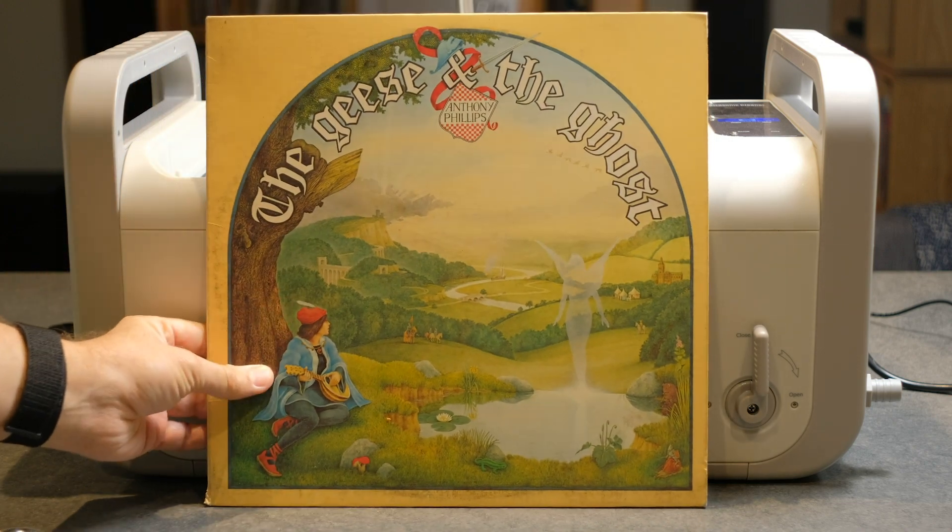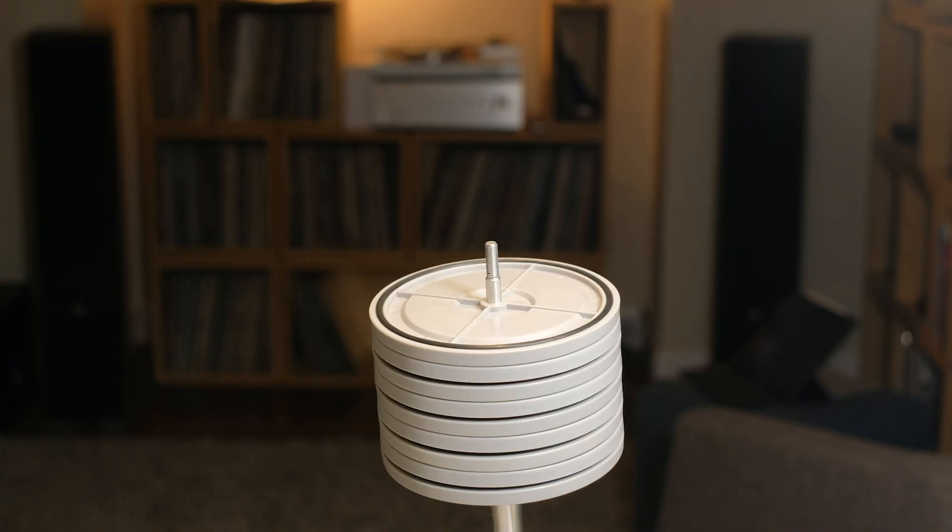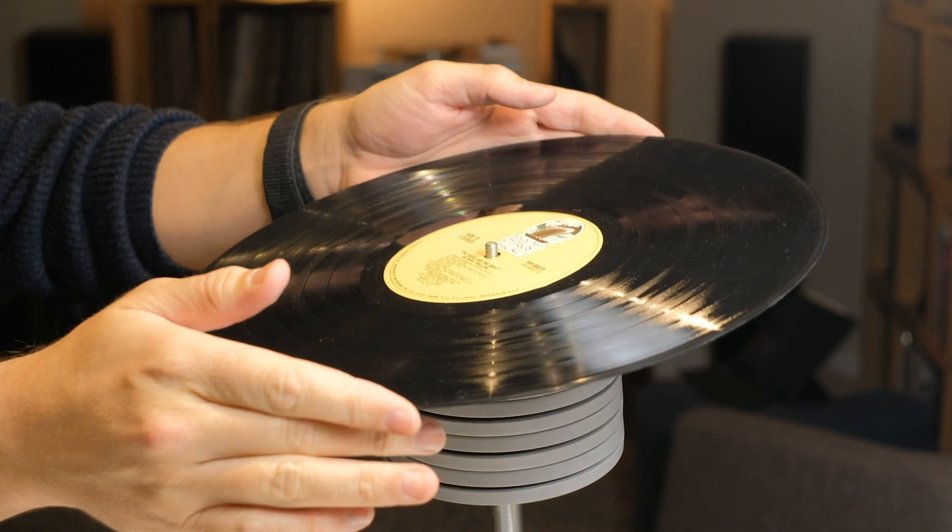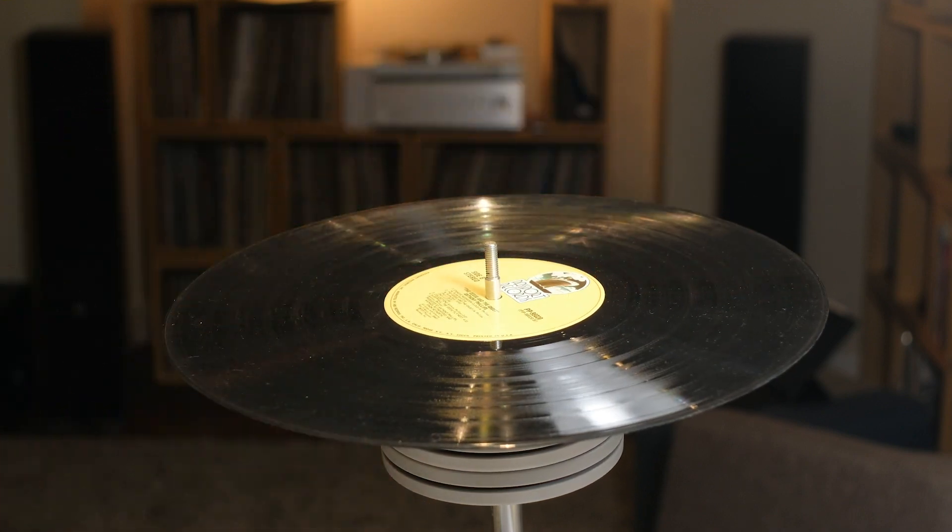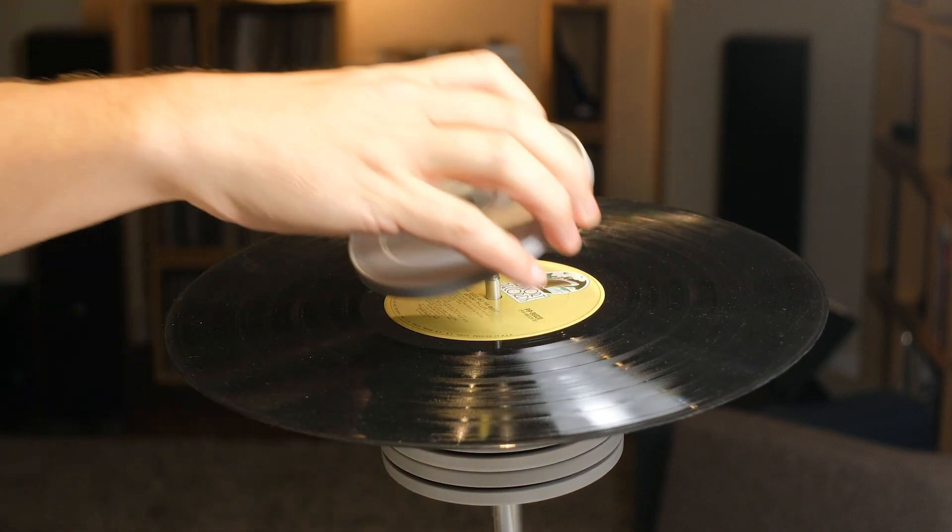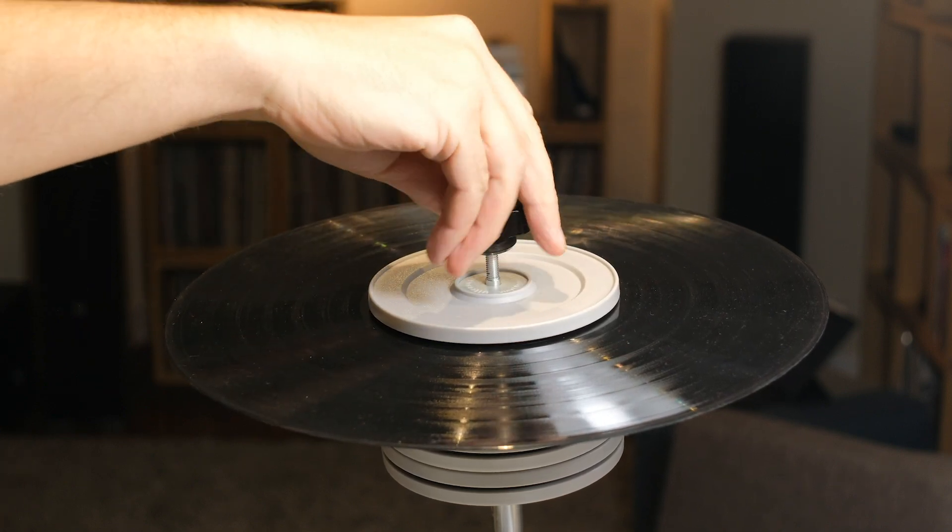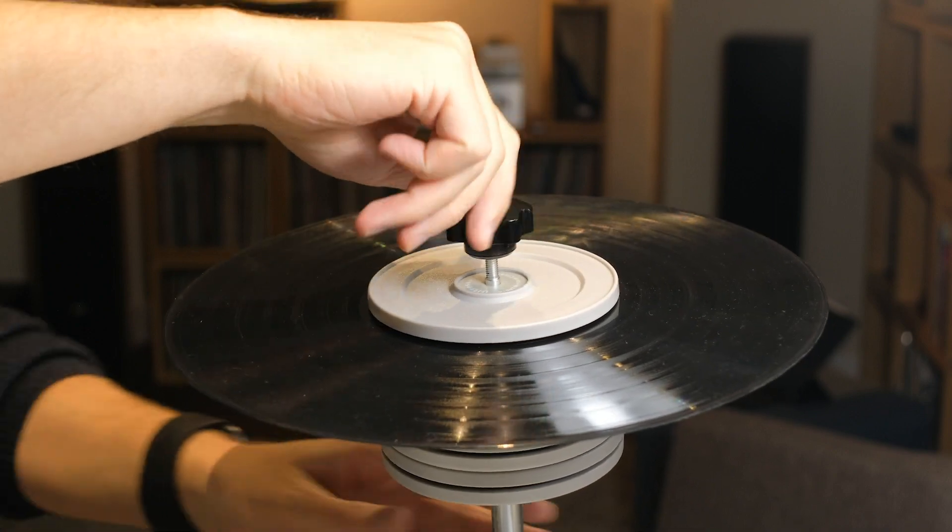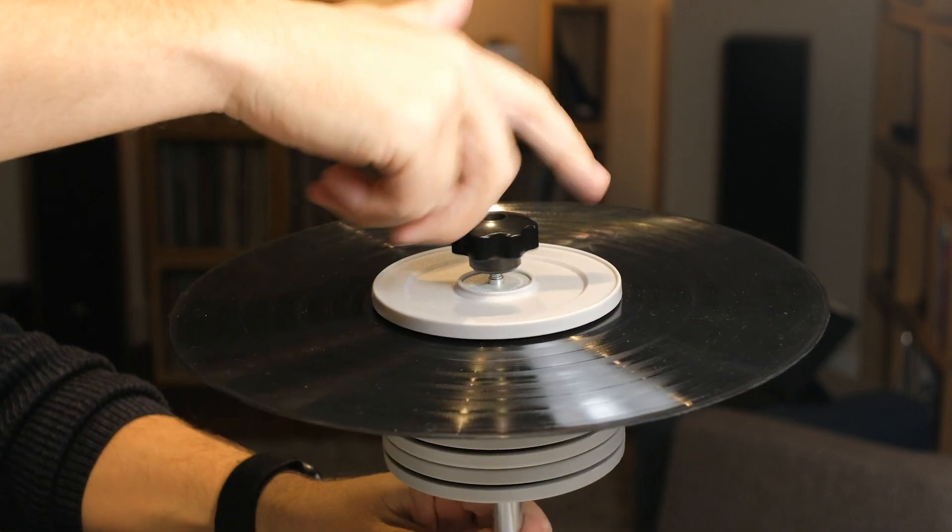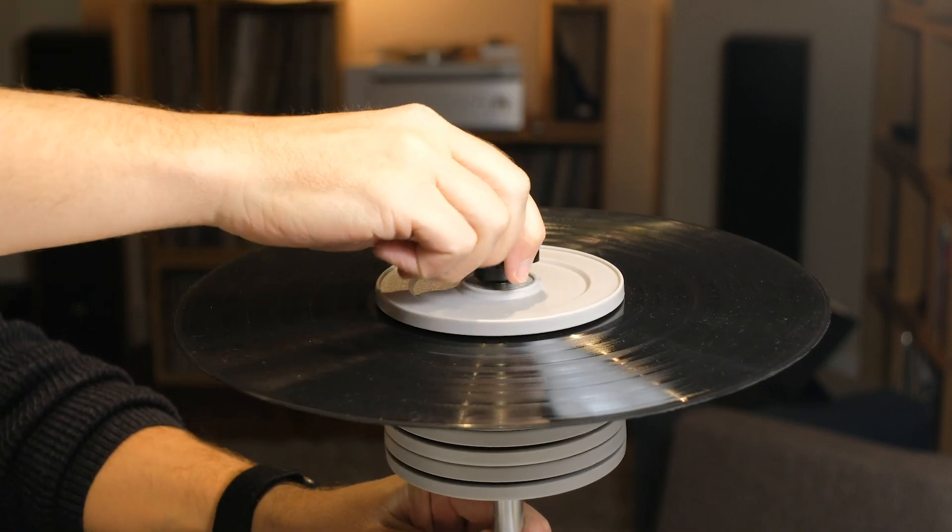Here's the record that I'm going to attempt to clean. You put it onto the spindle and you put the little spacer on top and screw it down so it can't move. That should stop water getting into the label. It doesn't really stop it but it does something.